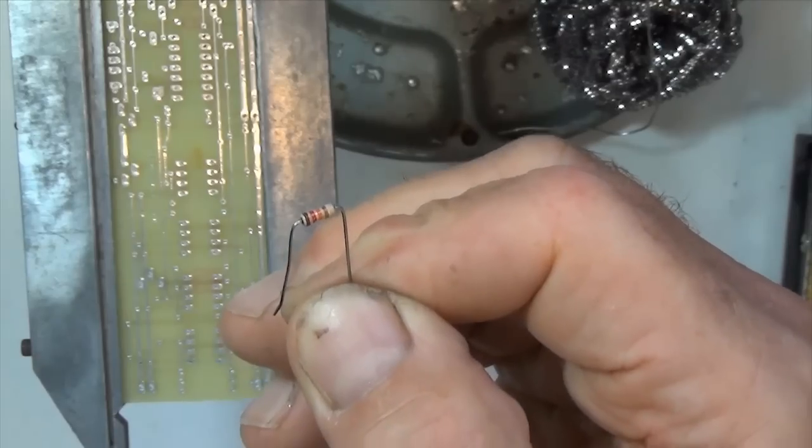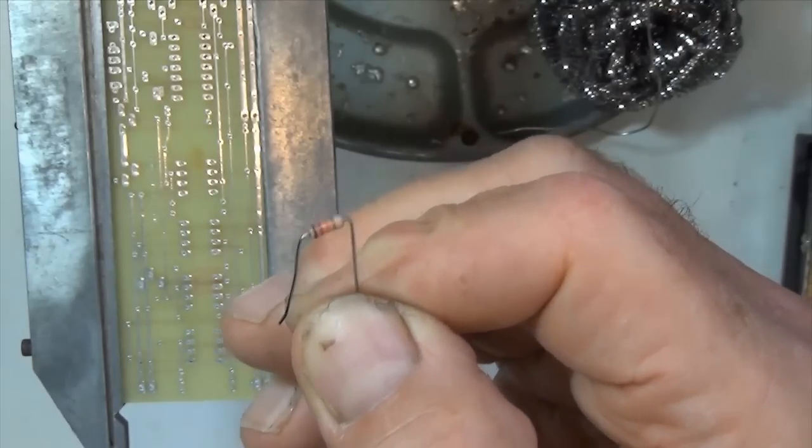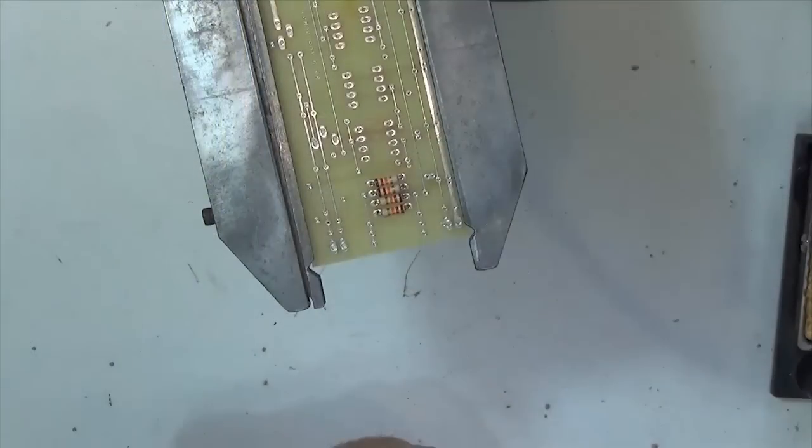So that they're at 90 degrees to the resistor body. Now we'll carefully insert them into the circuit board. I've installed the four resistors into the circuit board.